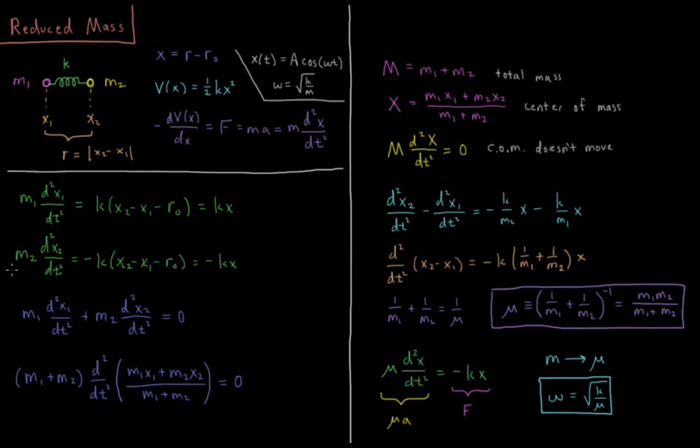For particle 2, we have m2 times the second derivative of position 2 with respect to time equals the reverse of this: minus k(x2 - x1 - R0) equals minus kx.